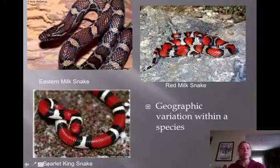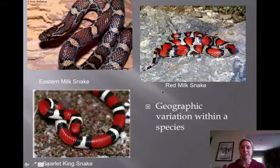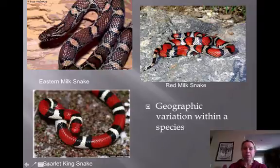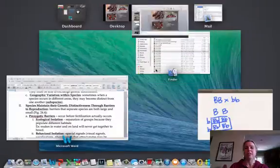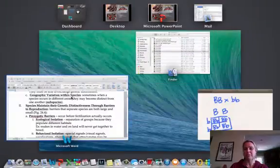These snakes are all technically the same species, but what we now call them are subspecies. That's because they're exposed to different environmental parameters and are becoming genetically different from one another to the point where they won't be able to interbreed. Right now they can, but eventually it's thought they won't — and that's when you call them a subspecies.